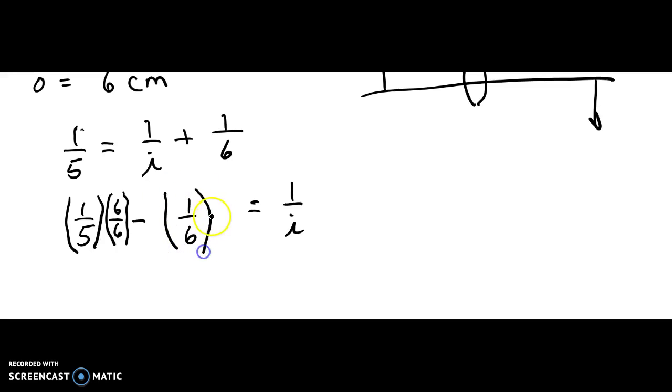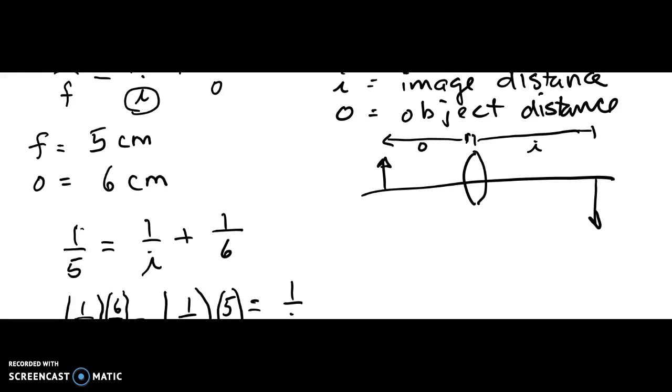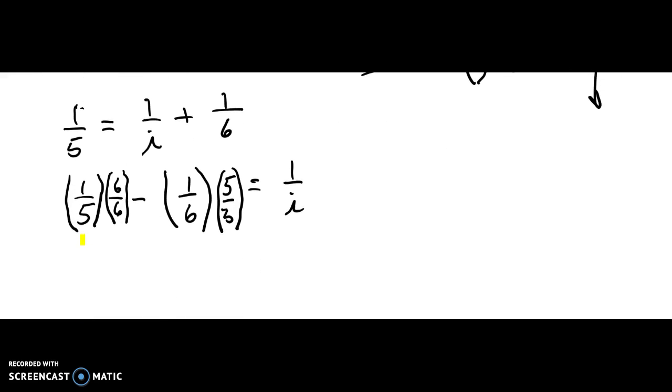And for my 1 over 6, I'm going to multiply that by 5 over 5. I used the 6 over 6 because the 6 was in the denominator, and 5 over 5 because the 5 was in that denominator.